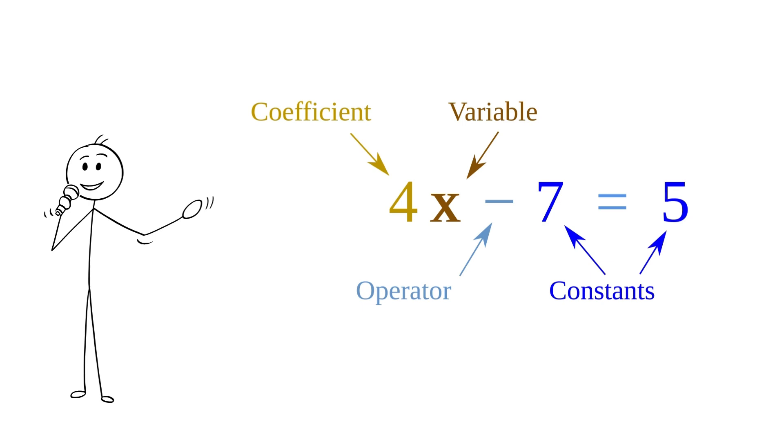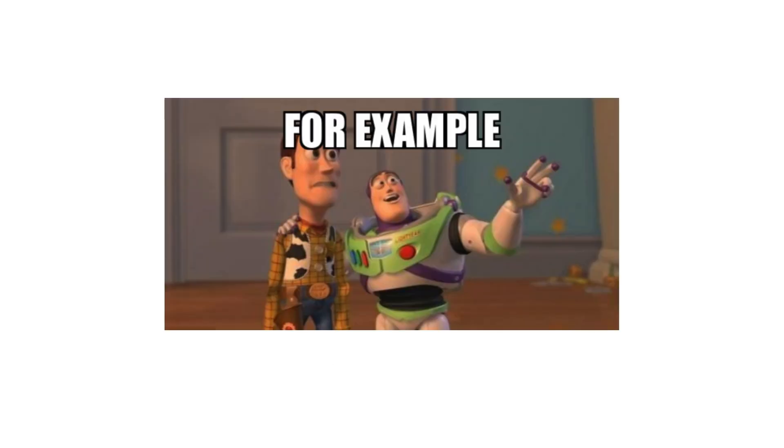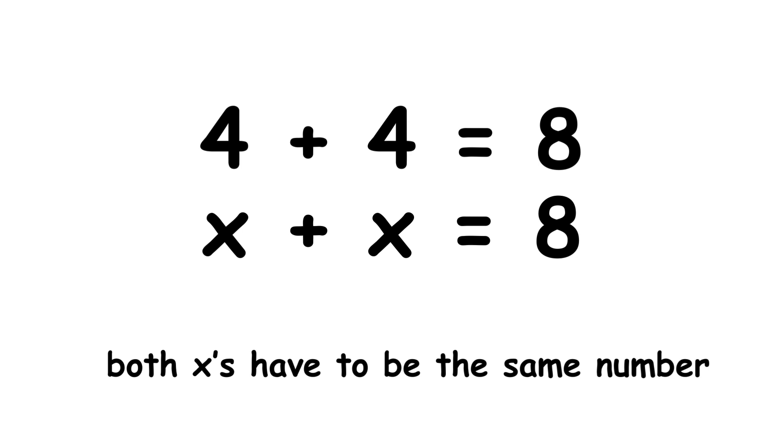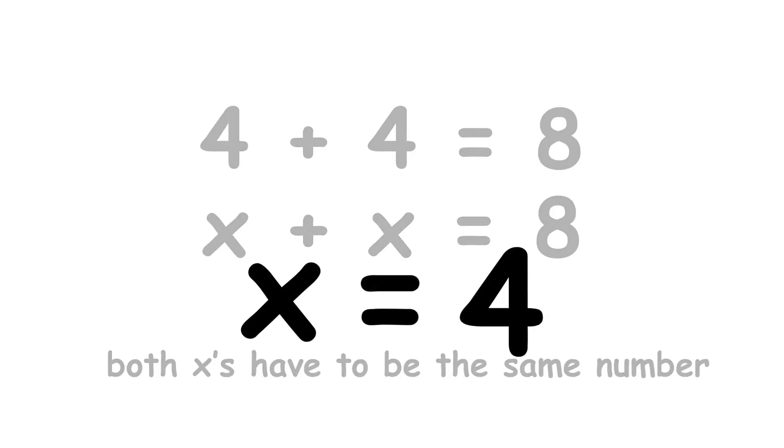Within a certain equation, every instance of a certain variable must represent the exact same thing. For example, consider the equation x plus x equals 8. Here, both x's have to be the same number. Since 4 plus 4 equals 8, we know that in this equation x equals 4.